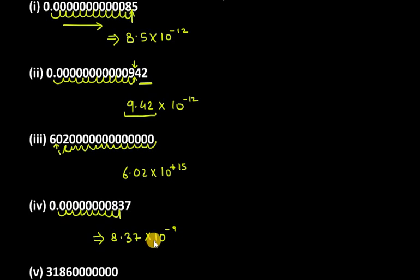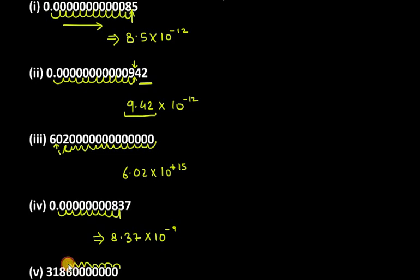Let's do the last one, which is 3186 followed by double 0, double 0, double 0, double 0, single 0. Since it is a very large number, we come from the back. Moving: 2, 3, 4, 5, 6, 7, 8, 9, 10 — so 10 displacements. This gives 3.186 into 10 raised to the power of positive 10. This is your answer for the last one.